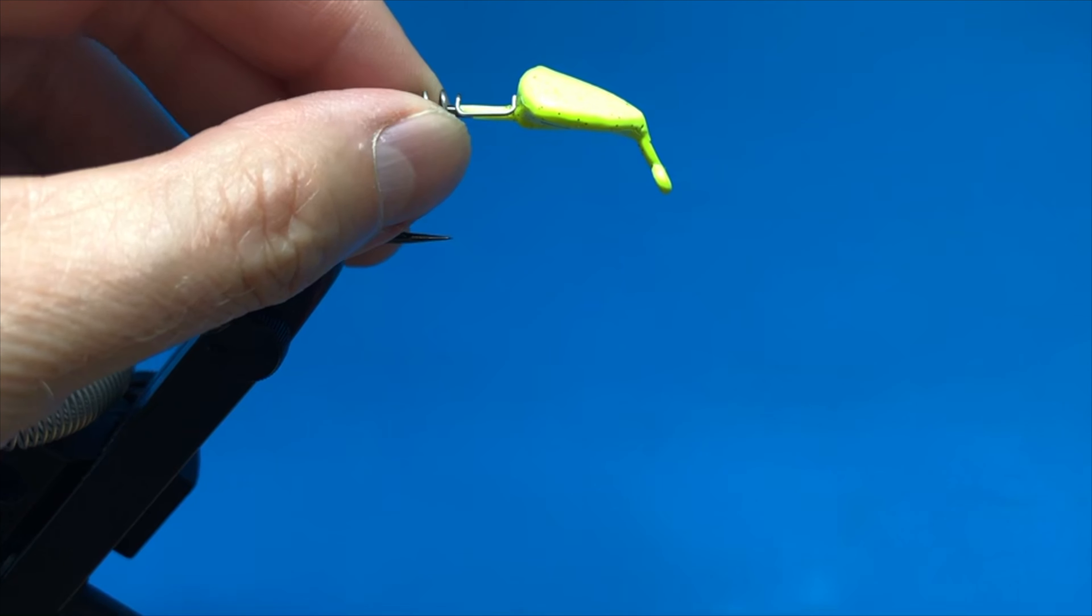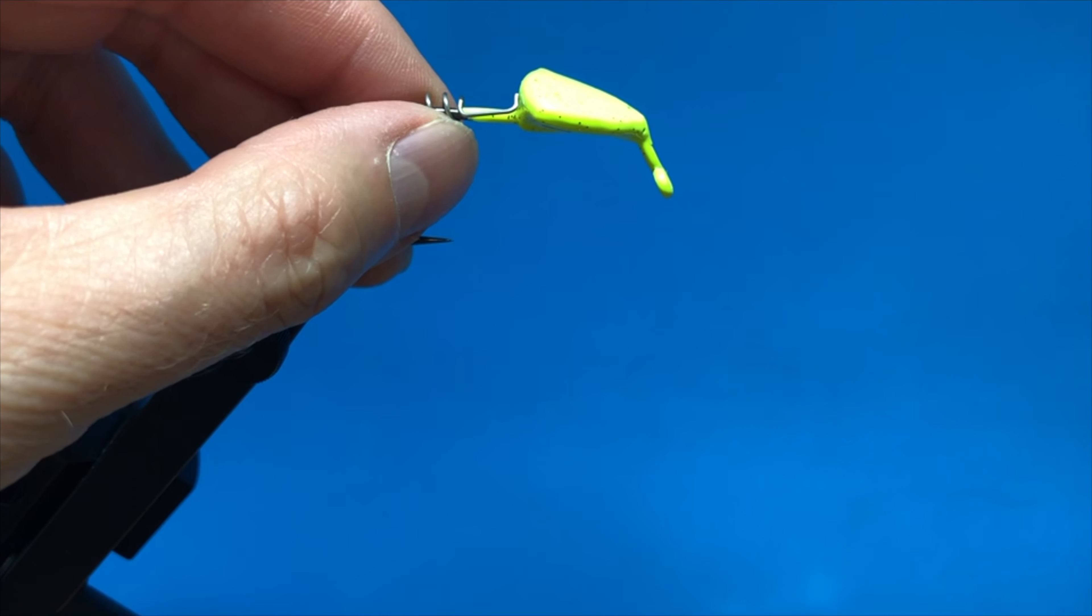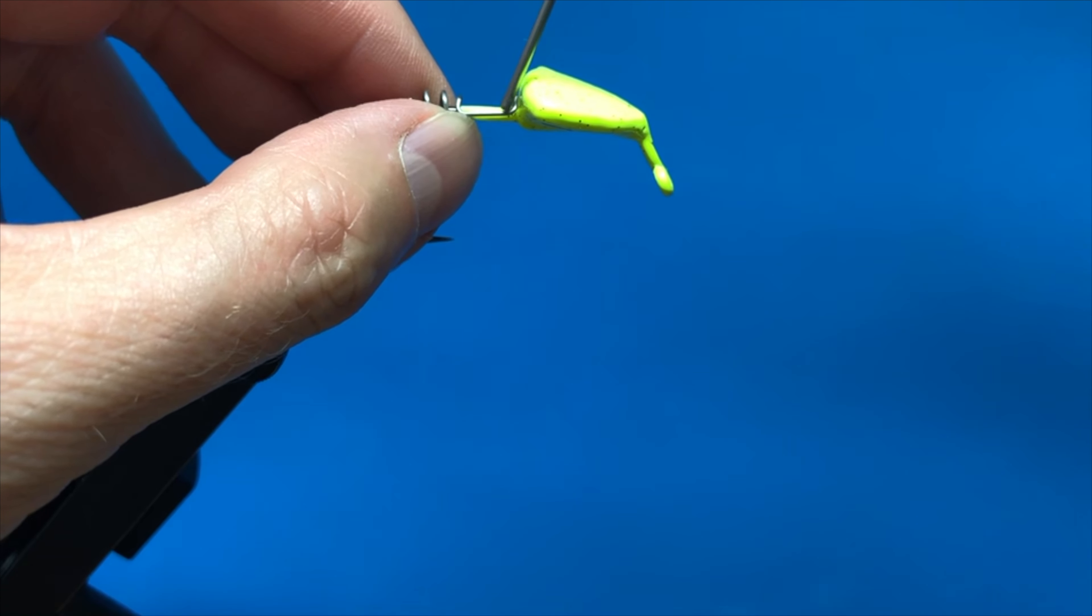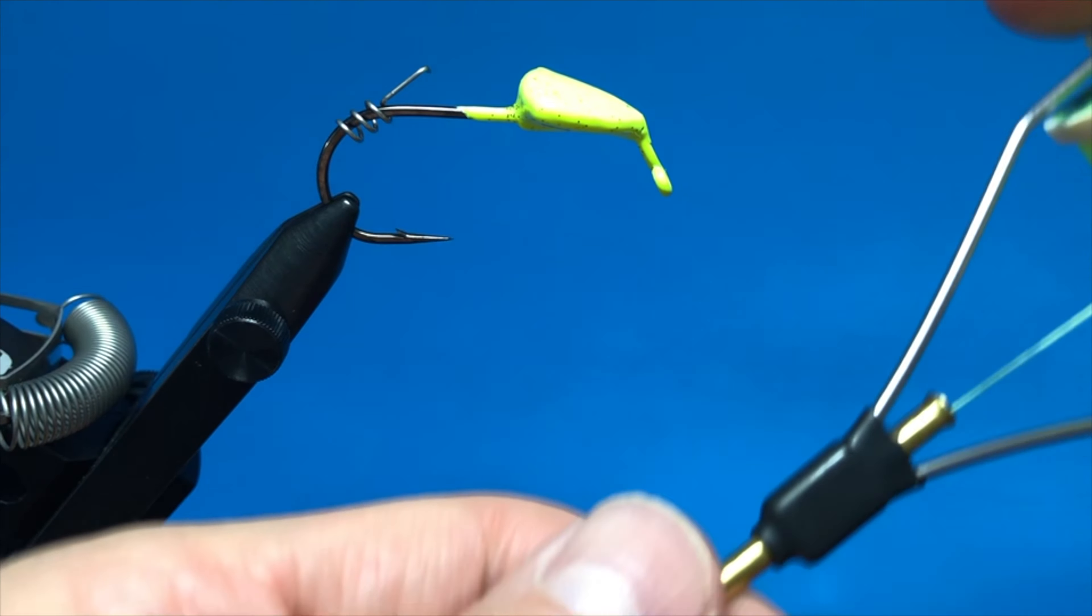You see the tag end there. If you don't want to put a rattle on your curl tail jig, you just move that all the way up. Screw it back really quick to start your thread.